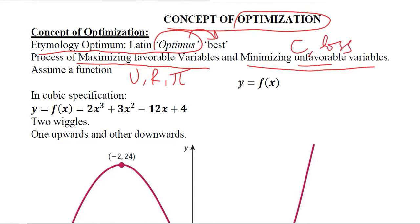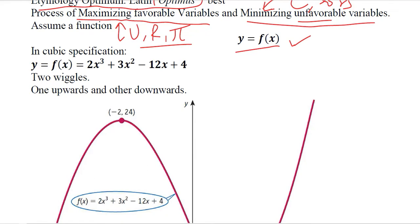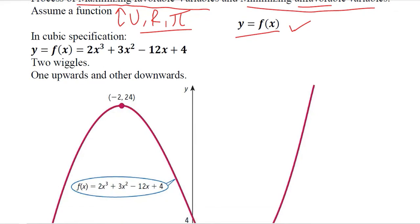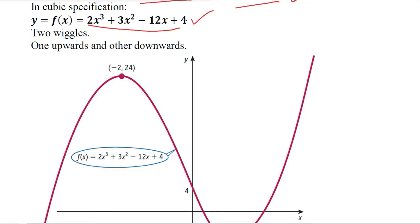So these are the variables that we will try to minimize, whereas we will try to maximize these variables. Now this is a given function that we can try to imagine in terms of its maximization or minimization, or broadly speaking, optimization. This is a cubic function as you can see, and whenever we plot a cubic function we get two wiggles.